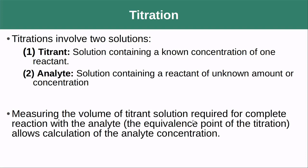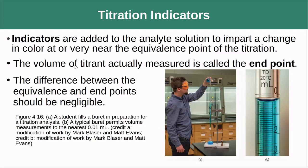Measuring the volume of the titrant solution — this is what we call a volumetric technique, where we're going to be making volume measurements — required for complete reaction with the analyte. The point at which complete reaction occurs is called the equivalence point of the titration, and that allows the calculation of the analyte concentration. Often this is done with indicators, which change color when complete reaction has occurred. When that color change happens, we call that the endpoint.